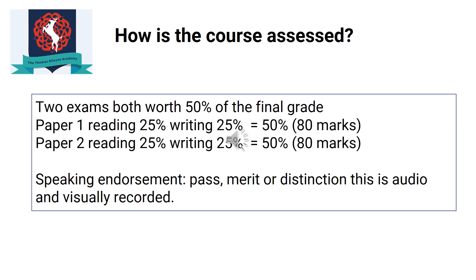What's assessed in the speaking endorsement is students' ability to present, respond to questions and feedback, and use standard English. It's usually a presentation where they present information and ideas, and it is recorded and filmed in class. Students can receive a pass, merit, or distinction, and it shows up on their certificate — which is particularly useful for students thinking of going into medicine or journalism.